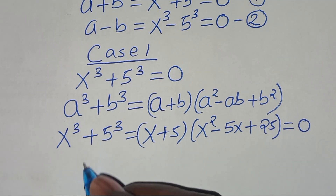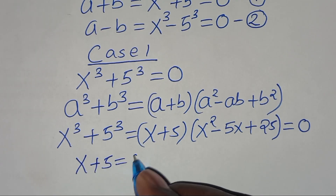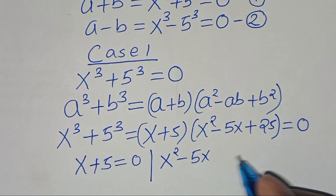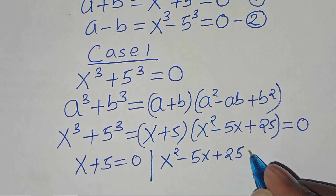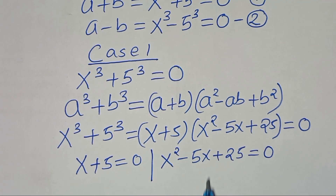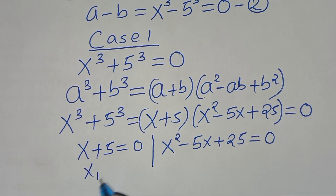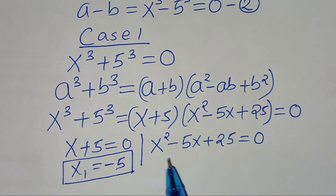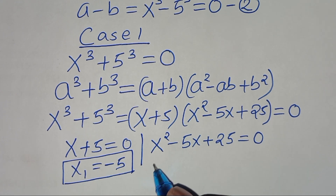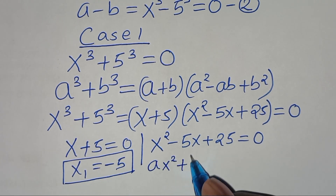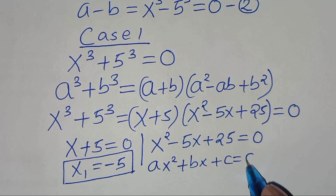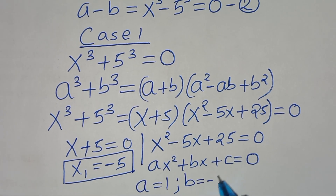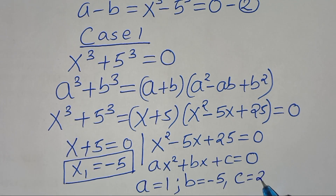So here we have two parts. The first part is x plus 5, this is equal to 0. The second part is x squared minus 5x plus 25, this is equal to 0 — this is the quadratic equation. So x1 is equal to minus 5, this is the first real solution. For the quadratic equation, which is in the form ax squared plus bx plus c equals 0, a is equal to 1, b is equal to minus 5, and c is equal to 25.